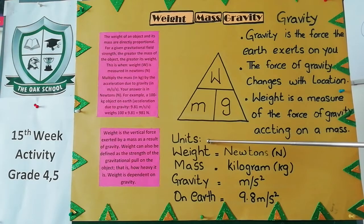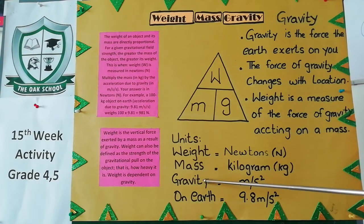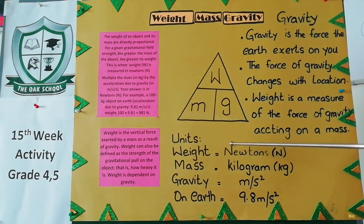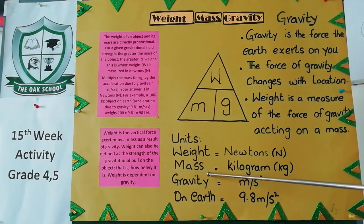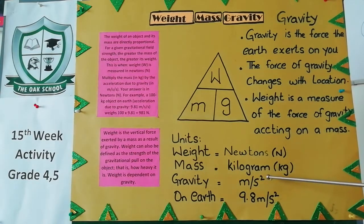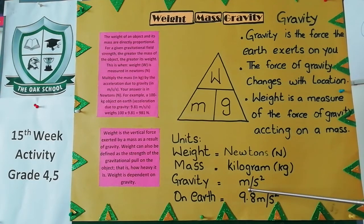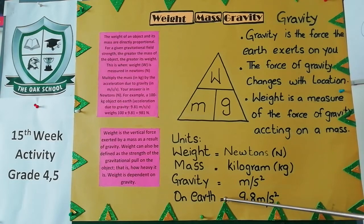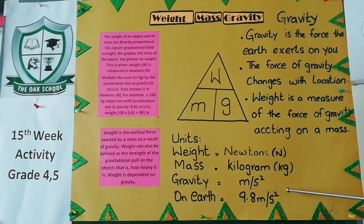These are our units. Weight, mass, gravity. Weight is measured in Newtons, symbol N. Mass is measured in kilograms, symbol kg. Gravity is measured in m/s². On Earth it equals 9.8 m/s².